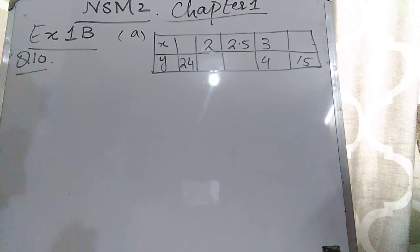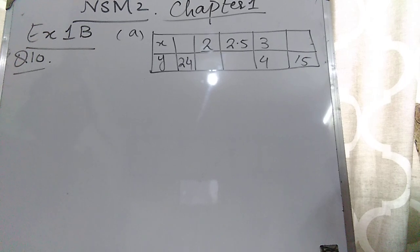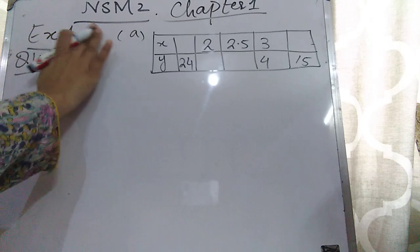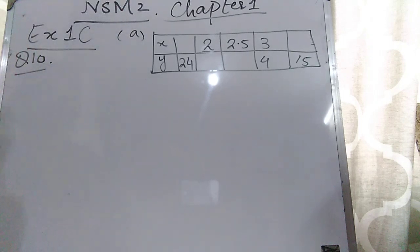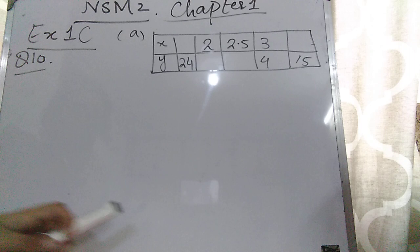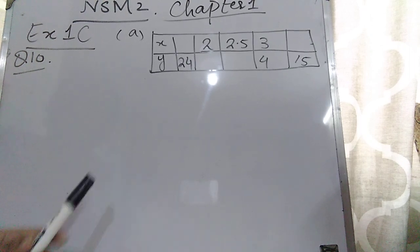Assalamu alaikum students, I hope you all are doing great. Today I am going to explain question number 10 of exercise 1C, and this is NSM 2, chapter 1. In question number 10, two tables are given and you have to find out the missing values of the tables.